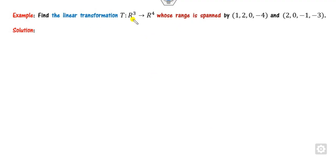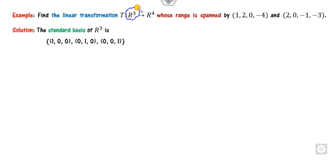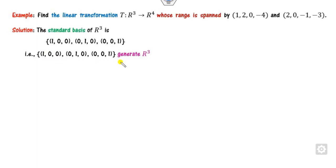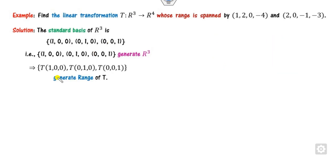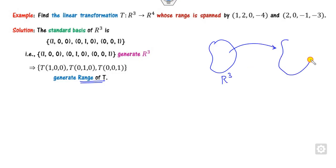Now, how do you form a linear transformation whose range is spanned by given vectors? Looking at the domain, which is R3 here, the standard basis of R3 generates R3. You have to map from R3 to R4, so you take elements from R3 and map them to R4. Since the standard basis vectors span the domain, the transformation will generate the range through those mappings.